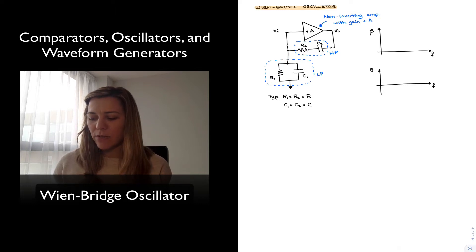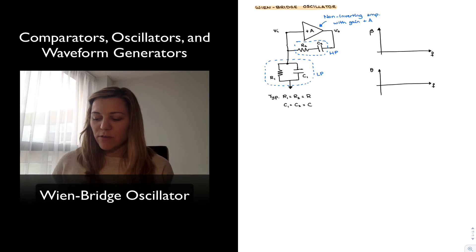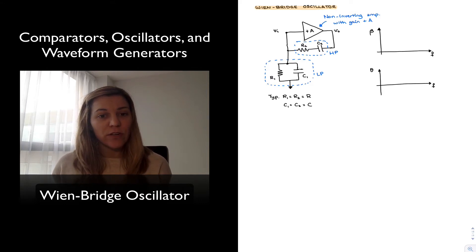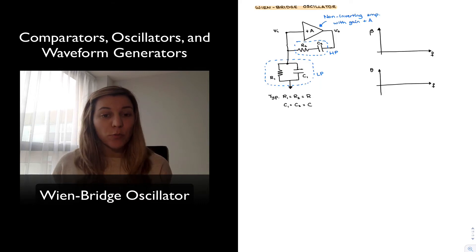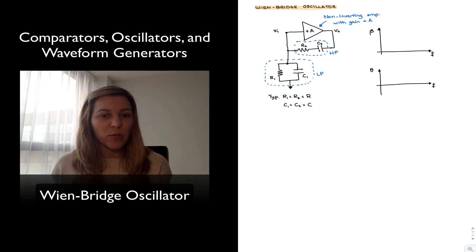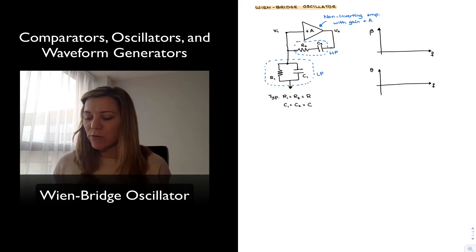Notice that what we have there consists of a high-pass filter followed by a low-pass filter, so it's a frequency-selective type of feedback network. The series combination acts as a high-pass filter because for very low frequencies the capacitor acts as an open circuit, while for high frequencies the capacitor acts as a short.